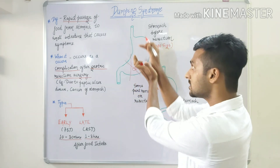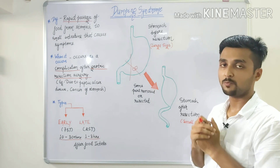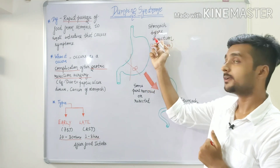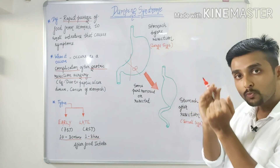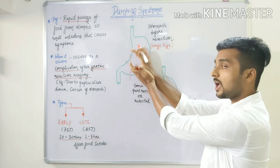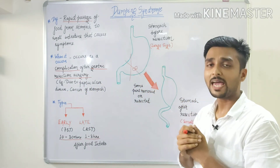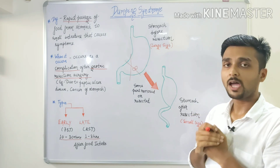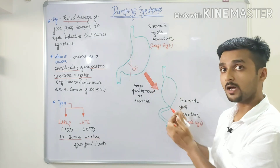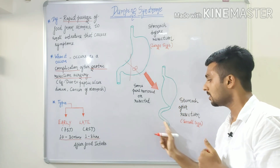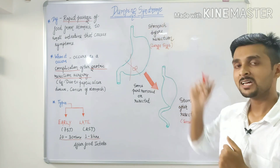After the surgery, the remaining parts of the stomach are joined together. Before resection, our stomach was large in size, but after resection, our stomach is small in size because we have removed some parts — due to peptic ulcer disease or cancerous growth. Now when we eat food, it passes from this small stomach directly and rapidly into the small intestine, causing what we call dumping syndrome.